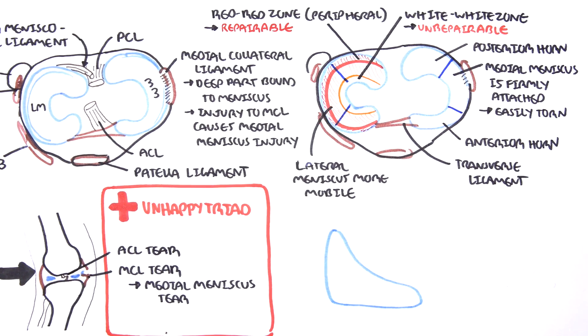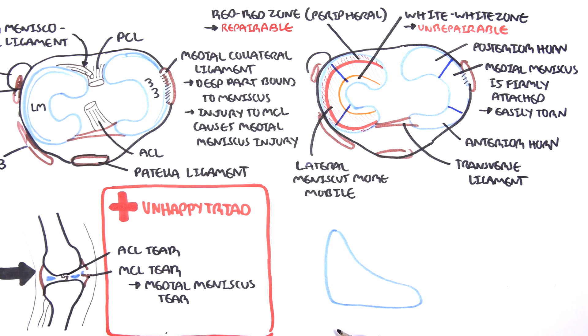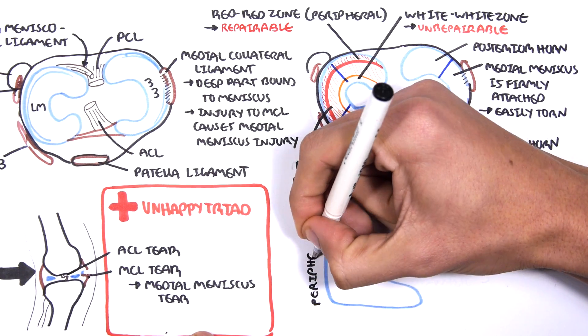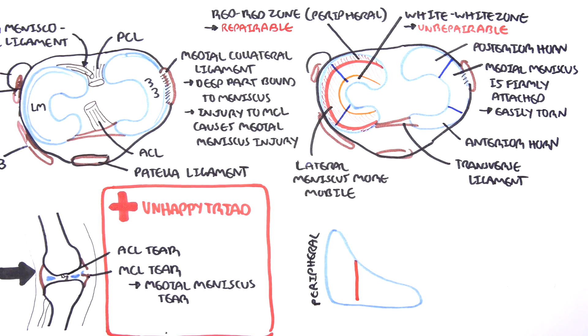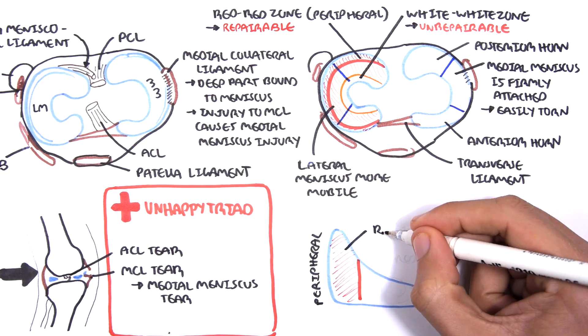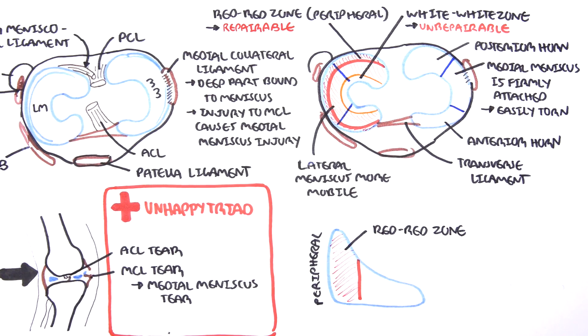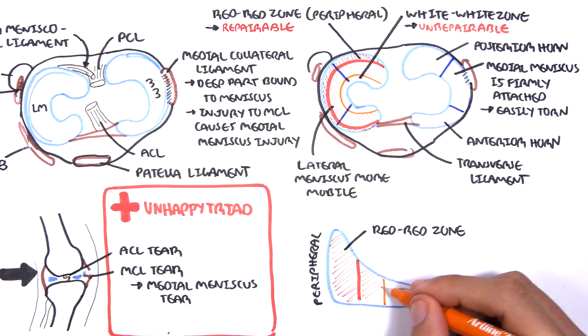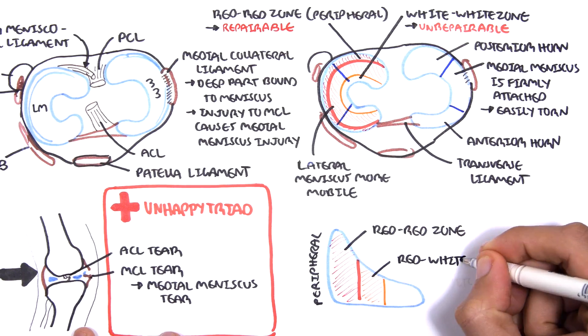Let's now look at the meniscus from a different view. Let's cut a slice of the meniscus from the side and look at it from that angle. Here again is your peripheral third, the red-red zone. The middle third is called the red-white zone and the inner third is the white-white zone.